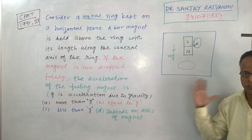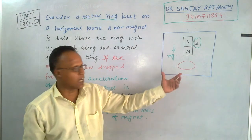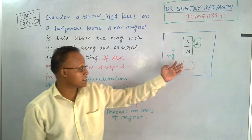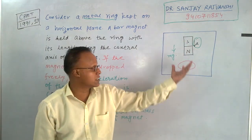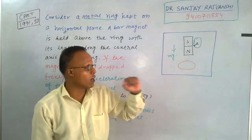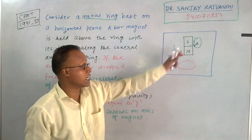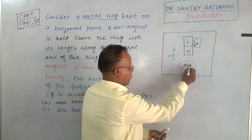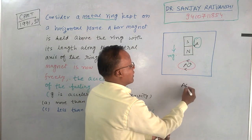The magnet moves downward towards the ring. According to Faraday's or Lenz's Law, the ring opposes the change in flux. Since the north pole is moving towards the coil, the ring behaves as a north pole — because like poles repel — and the induced current is in the anti-clockwise direction.